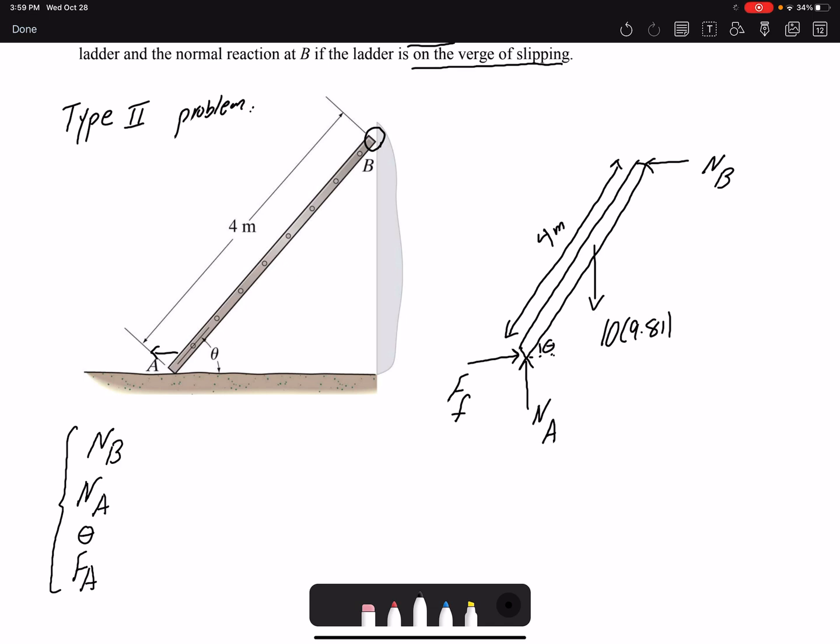But because the problem is telling me that the ladder is on the verge of slipping, I know I can write the friction equation. So technically I have three unknowns, or you can think of it as four unknowns but also with four equations.